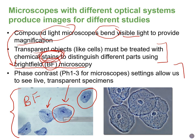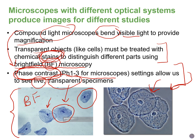In our lab, we are lucky because we have microscopes that also have an additional setting known as phase contrast, which is much more rare to have in a biology lab. Phase contrast allows us to see live specimens that are transparent — so even if we don't stain them, we are able to use phase contrast to see these organisms.